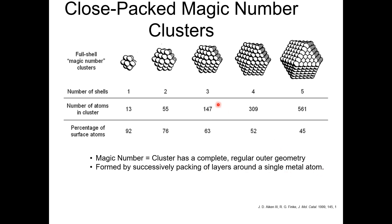Magic number clusters are formed by successfully packing up layers around a single metal atom. Starting with a single atom, we add layers one by one — as illustrated in the figure — where each additional shell represents a new layer packed around the core.